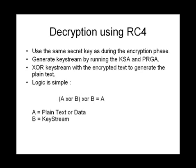Decryption is very simple due to the XOR property. Encryption is A XOR B, where A is plaintext and B is the keystream. For decryption, we take A XOR B and XOR it again with B — that is, A XOR B XOR B — which equals simply A. So the decryption logic is: take the encrypted byte, generate the same keystream, XOR them, and you get back the original plaintext.